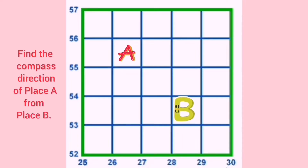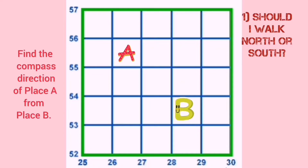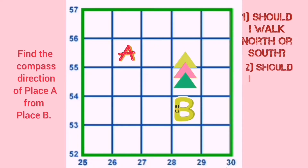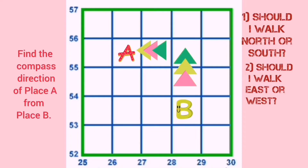Now we will do the same problem using the shortcut method. Step 1: as we are from place B, put your finger on place B — we are going to walk to place A. Step 2: answer two questions. The first question should always be: should I walk north or south? In this case I have to walk north. Second question: should I walk east or west? After going north, east is on one side and west is the other — so which direction? West. So the answer is northwest.